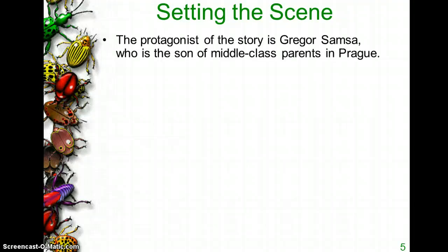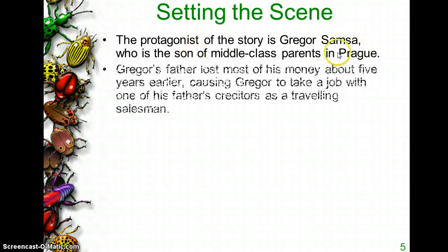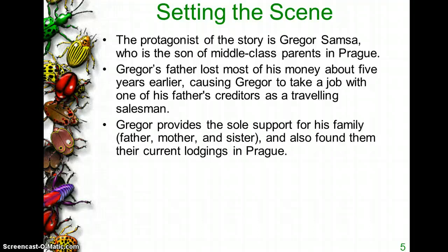So setting the scene: our protagonist — remember, the protagonist is the good guy, like Peter Parker in Spider-Man — his name is Gregor Samsa. He is the son of middle-class parents and they live in Prague. Basically, five years prior to the beginning of the story, Gregor's father lost all of his money. So Gregor went out, got a job, and he's working as a traveling salesman. He alone is the sole supporter for his family. His family consists of his father, his mother, and his sister, and everybody else stays home while he goes to work.